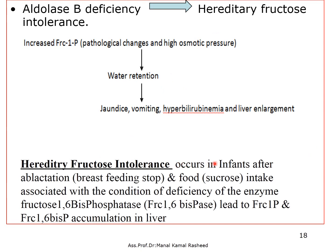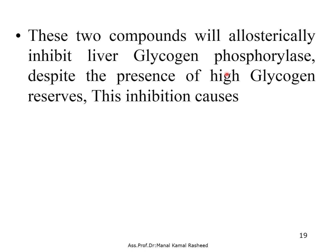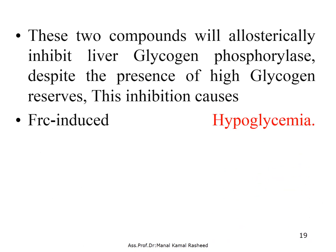Hereditary fructose intolerance occurs in infants after ablactation, when breastfeeding stops. Deficiency of aldolase B leads to fructose 1-phosphate and fructose 1,6-bisphosphate accumulation in the liver. These two compounds allosterically inhibit liver glycogen phosphorylase despite the presence of high glycogen reserves, causing fructose intolerance.